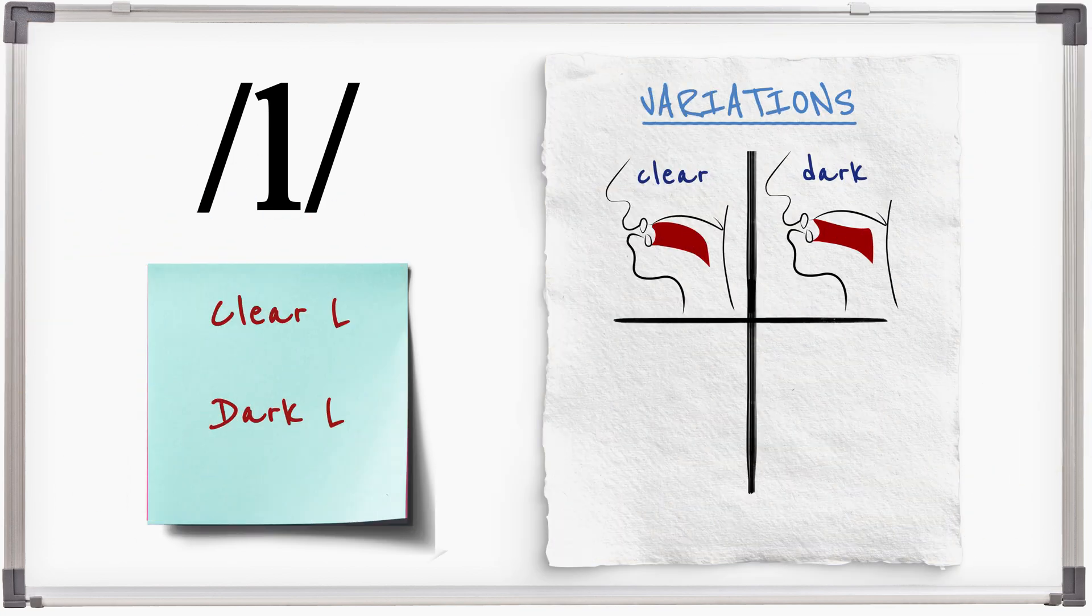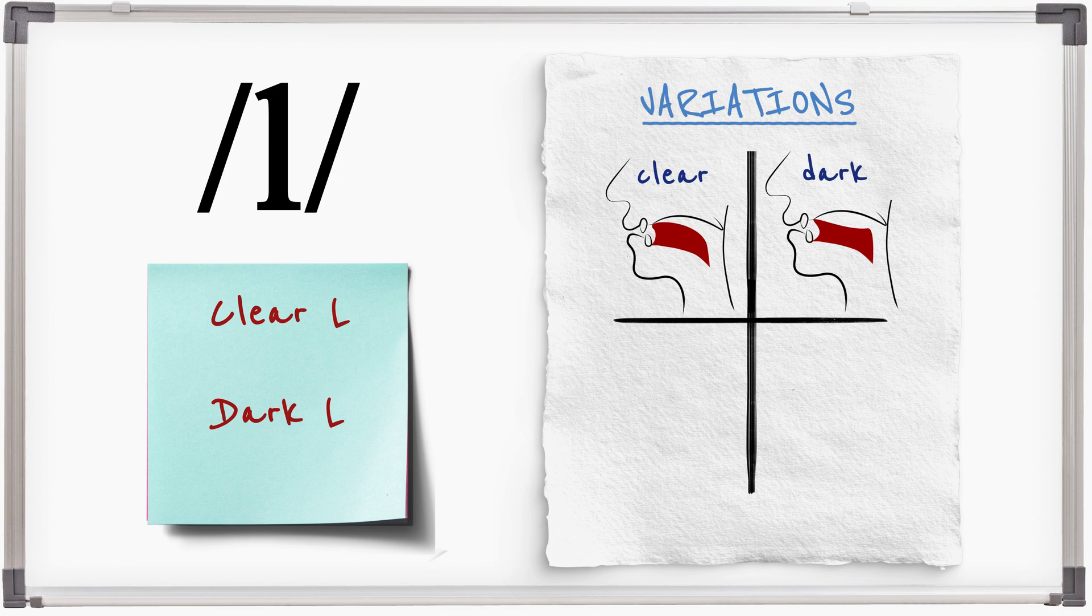There are two positions for L in GB English: Clear L and dark L. Clear L is found before vowel sounds and Y, and dark L is found in all other places.